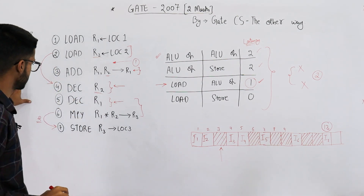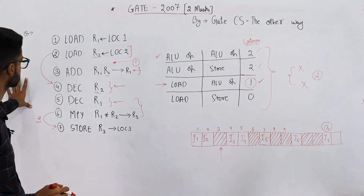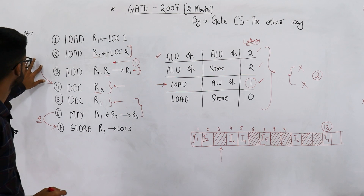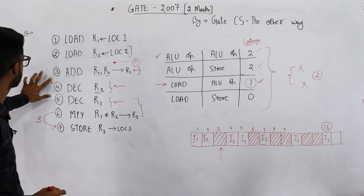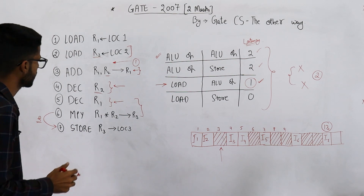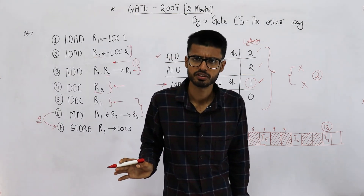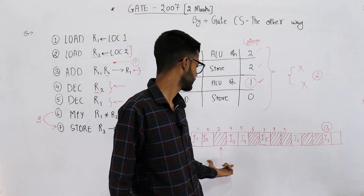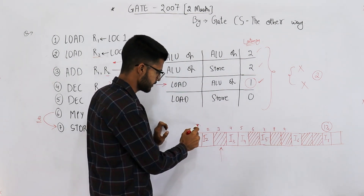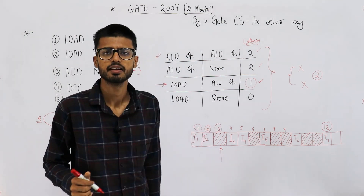The answer to this question is 13. This is the Gantt chart showing the instructions executed and the corresponding clock cycles. I'll see you in the next video.